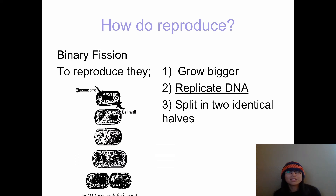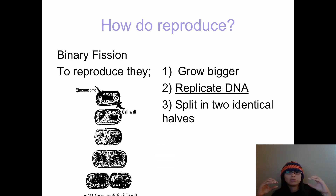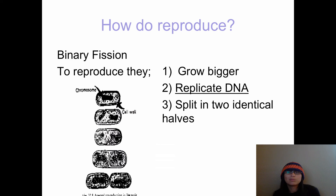Some bacteria reproduce so quickly that they can split every 20 minutes. So if you have one bacterium, it splits into two every 20 minutes, and then those bacteria split into two more after another 20 minutes, and so on. Some bacteria can reproduce very quickly — it just depends on what type of bacteria we're talking about.